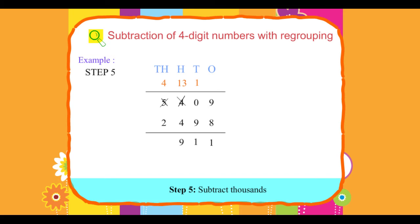Step 5: Subtract thousands. Four thousands minus two thousands equals two thousands.